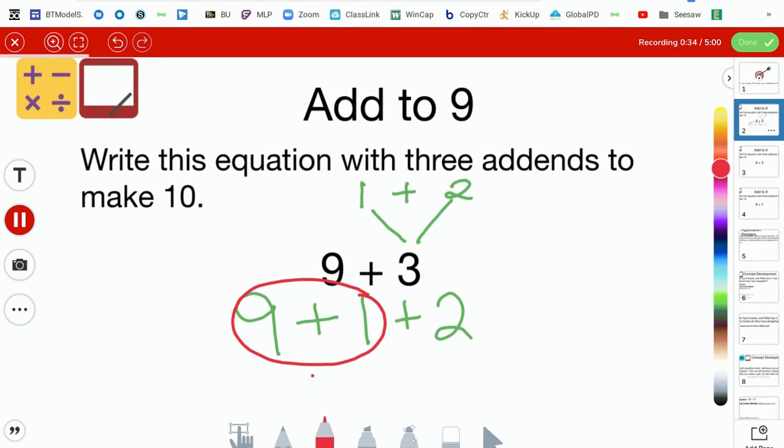10 plus 2 equals 12. So that must mean that 9 plus 3 equals 12.